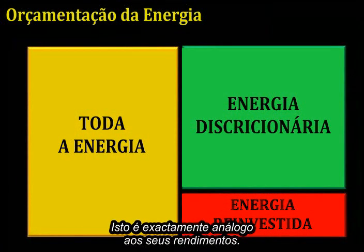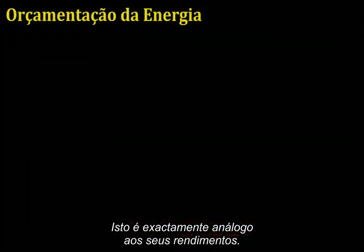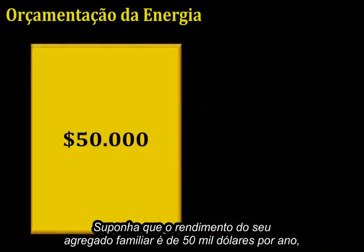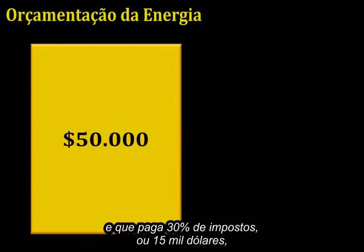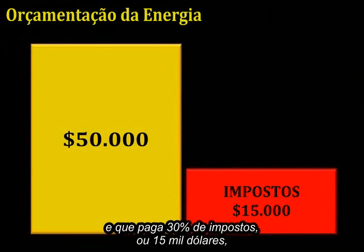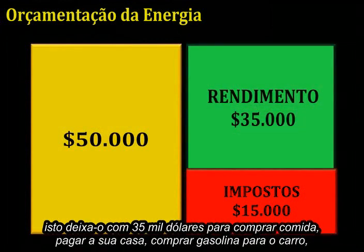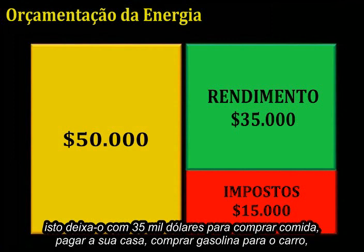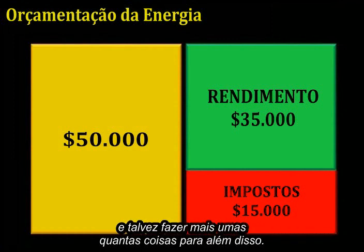This is exactly analogous to your earnings. Suppose that your household earns $50,000 a year, and your total taxes are 30%, or $15,000. This leaves you $35,000 to buy food, pay for your shelter, purchase gasoline for your car, and maybe do a few other things besides.